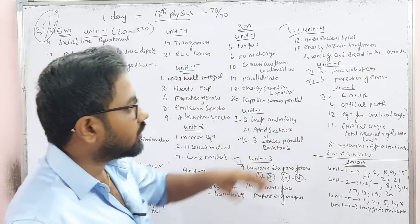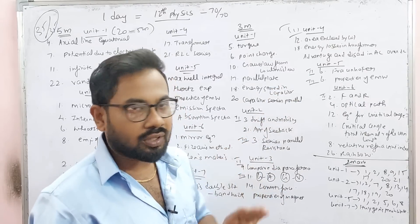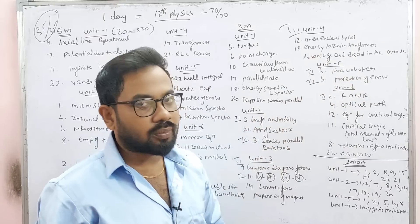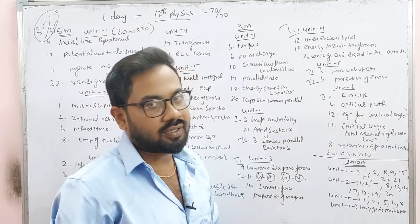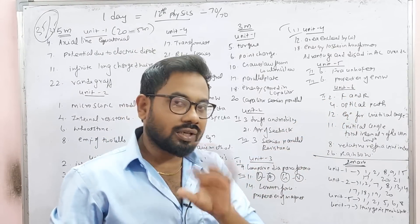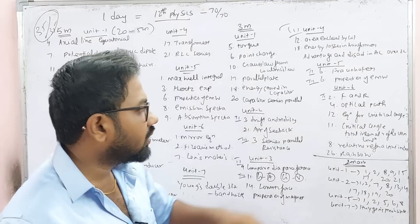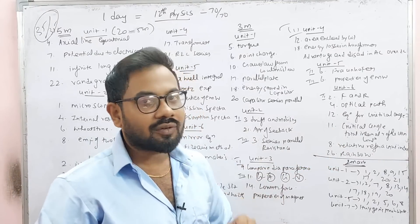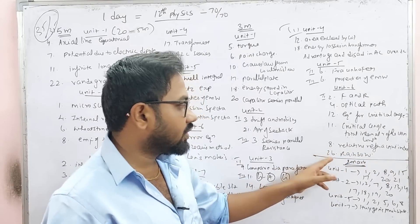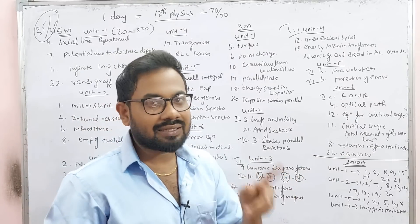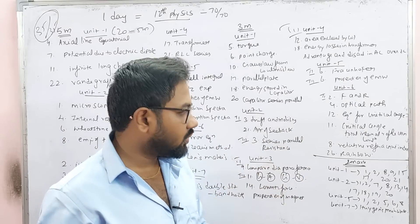Unit 5: Roman numeral 2 — Fraunhofer lines. 6th question — Fraunhofer lines. Roman numeral 3. Unit 6: 2nd Roman number, 2nd one — F and R relation, optical path derivation. 12th question — equation for critical angle, critical angle derivation. What is critical angle? What is total internal reflection? Condition for total reflection — that is 3 marks. Relative refractive index. 26th question — Rainbow. What is a rainbow? There are two types: primary and secondary rainbow. 8th mark, 2 marks.